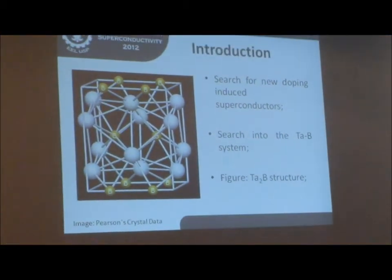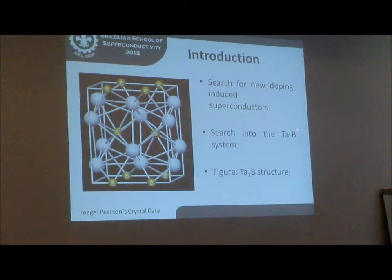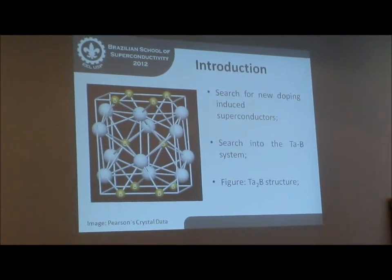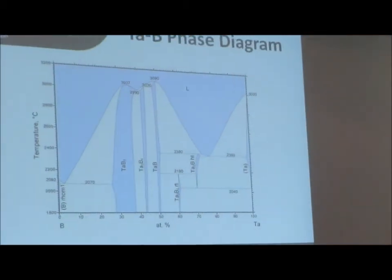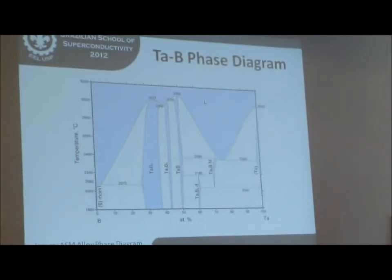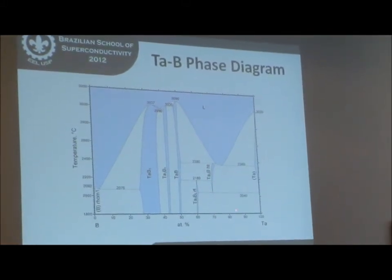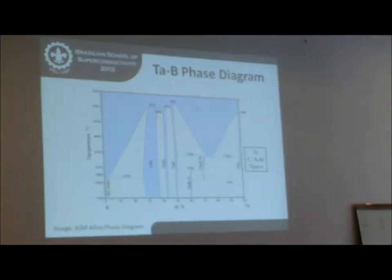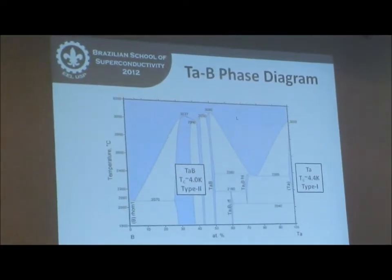Our motivation here had gone to search for yttrium-induced superconductors, and we tried to search them into the tantalum boron system. We had to go around the tantalum two boron one phase. And this is like our structure. Here we have the phase diagram. Here is our two boron phase. And we are going to do some work around it. The tantalum has a critical temperature of about 4.4 and it is a type 1 superconductor. At the rich tantalum region, the tantalum boron is a superconducting type 2 with 4.0 Kelvin.